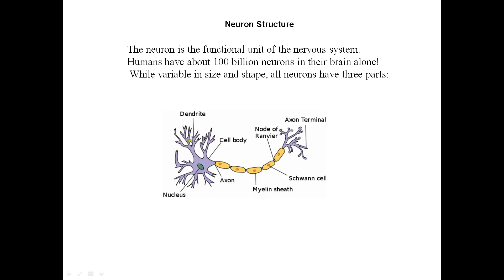The first part is the dendrites. The second part is the cell body, which contains membrane-bound organelles, one of which is the nucleus — the nucleus controls the cell.